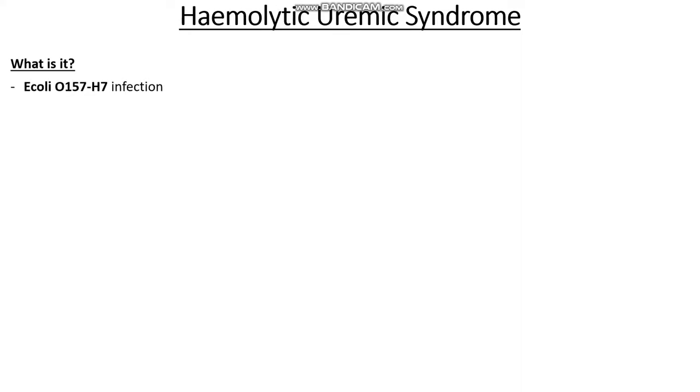So what actually is HUS? Well in actuality it's an infective disease, and it's infection with a very specific strain of E. coli known as the O157:H7. And it usually occurs in children.